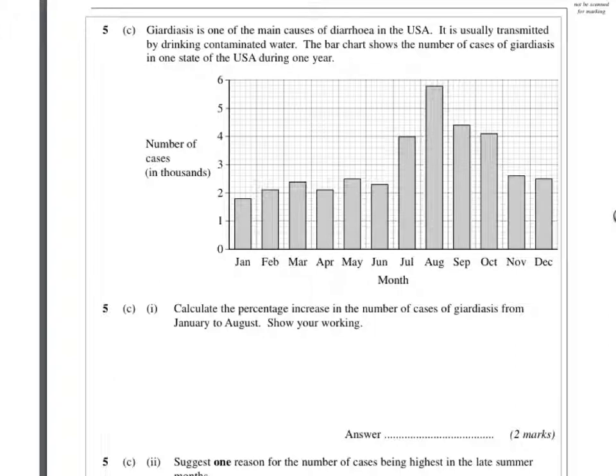So the blurb here, it's telling you the number of cases of this diarrhea in the USA. It's normally transmitted by drinking water. On the x-axis we've got the numbers of thousands of people suffering from diarrhea, and then the y-axis shows the months of the year.